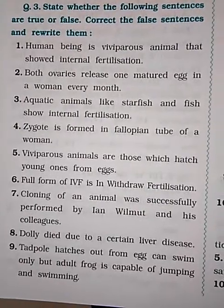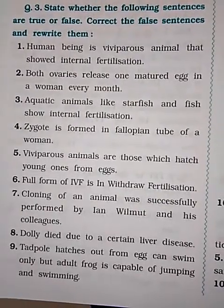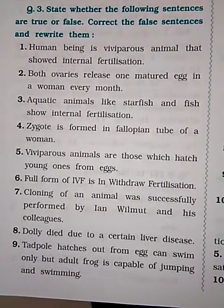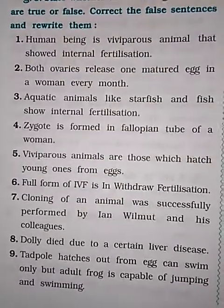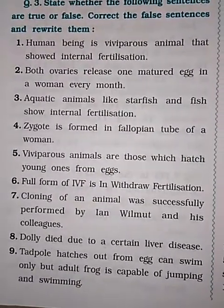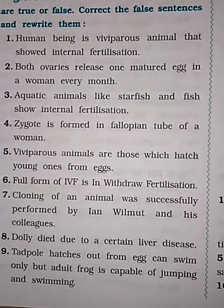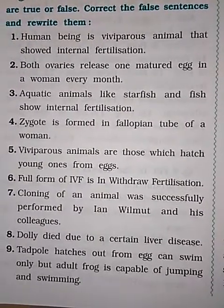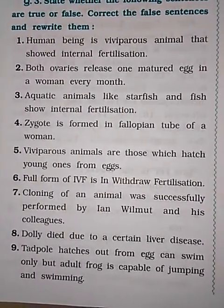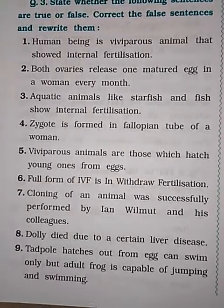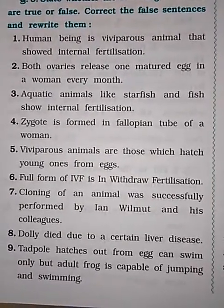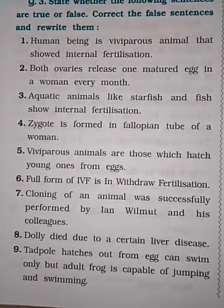Both ovaries do not release eggs simultaneously. Question: Aquatic animals like starfish and fish show internal fertilization. Answer: False — aquatic animals like starfish do not show internal fertilization. Question: The zygote is formed in the fallopian tube of a woman. Answer: True.